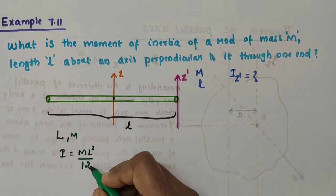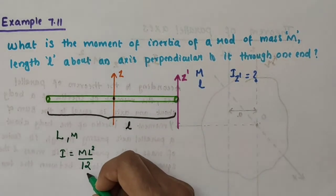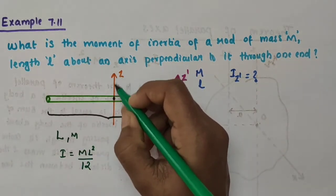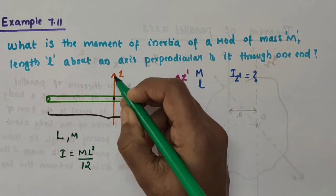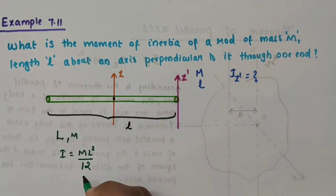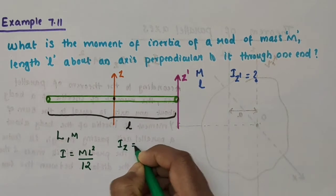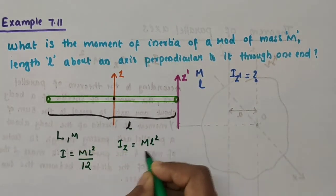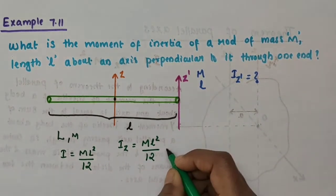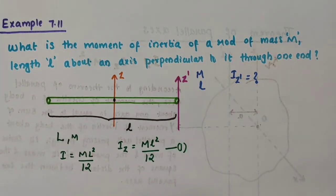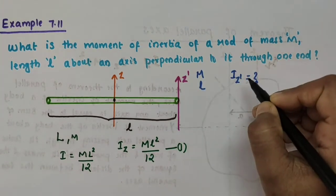I hope you remember this expression; otherwise I will provide the link in the description box. So here, that axis is the z-axis, since the z-axis is perpendicular to the rod and passes through the midpoint. We can write I_z = m × l²/12. I am taking this as equation number 1. So we have I_z. What we want to find out is I_z-dash.